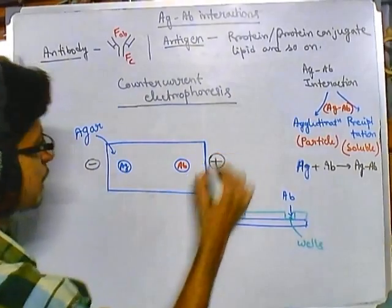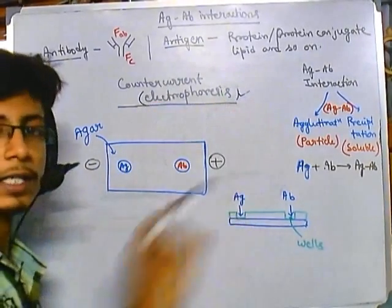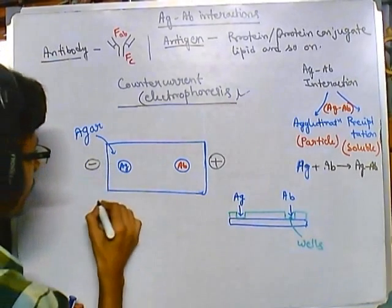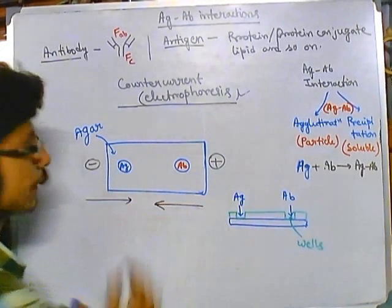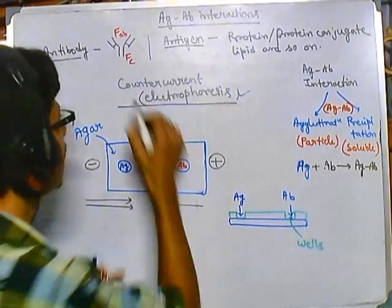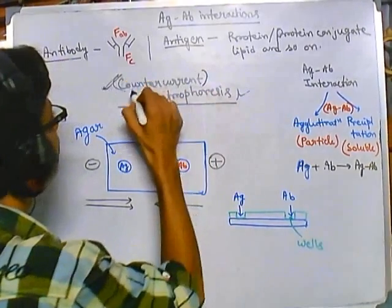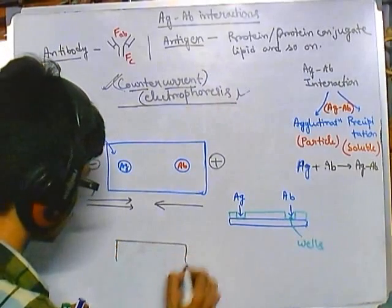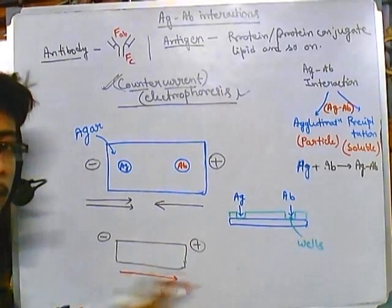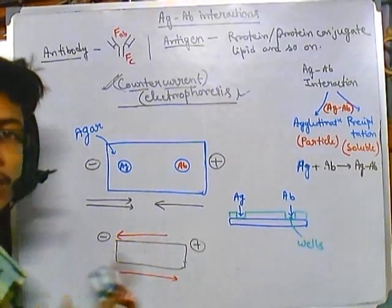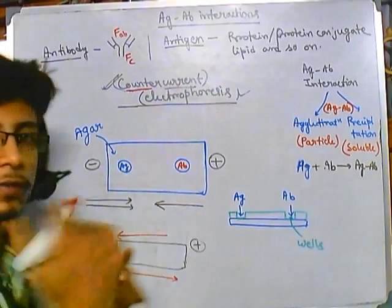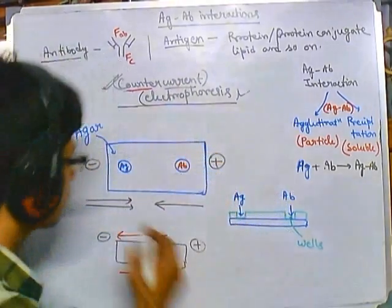We take the unknown antigen and the known antibody, and we provide electrodes — a negative charge electrode on one side and a positive charge electrode on the other. Because we are running electrophoresis, we have a charge distribution. In normal electrophoresis movement occurs in one direction, either from negative to positive or from positive to negative.